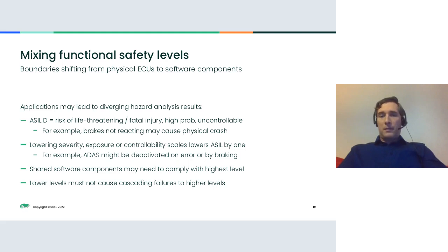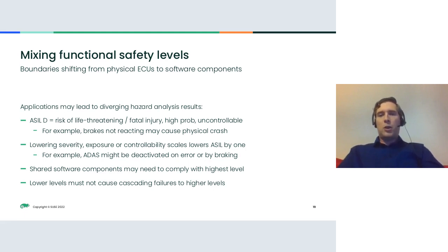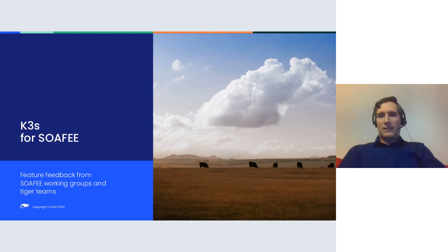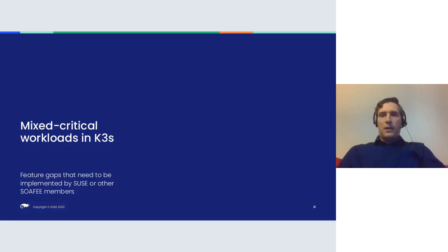When dealing with software components shared across a mix of safety integrity levels, the components used by all of them may need to adhere to the highest ASIL level among them. It must be ensured that lower ASIL components — for example ASIL B — do not cause a cascading failure affecting ASIL C or D components. In other words, the software on your radio crashing must not stop the brakes from working.